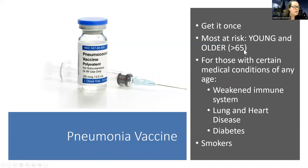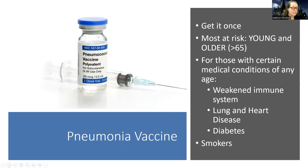The pneumococcal vaccine is one you generally get just once. Those most at risk include very young children under age two and older adults, as well as those with certain medical conditions like a weak immune system, lung and heart disease, diabetes, or smokers. Not everyone gets the pneumonia vaccine until they're older, unless they have one of these conditions or are high-risk — such as those with autoimmune disease.